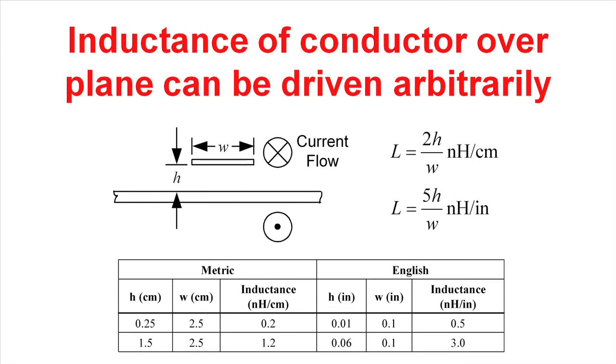The second kind of trace that we'll consider is a trace that's located over a ground plane. We'll consider a couple different options for that trace, but the formulas have gotten a lot simpler. This actually came out of my Fields book from when I was in college. It's a pretty familiar formula. The trace is just simply some constant times the separation between the trace and the ground plane divided by the width of the trace.